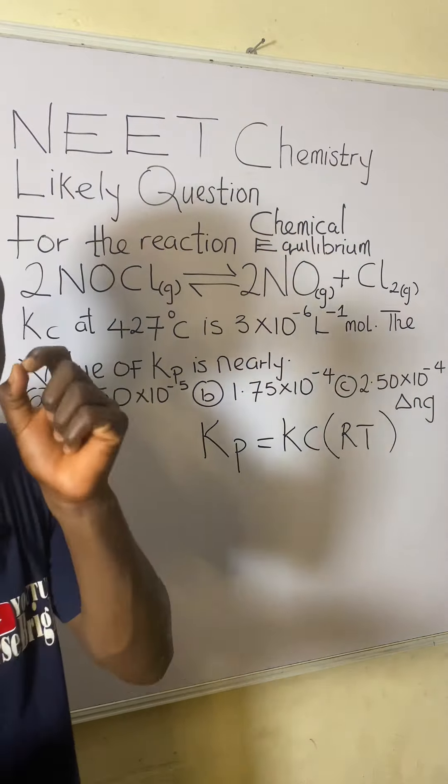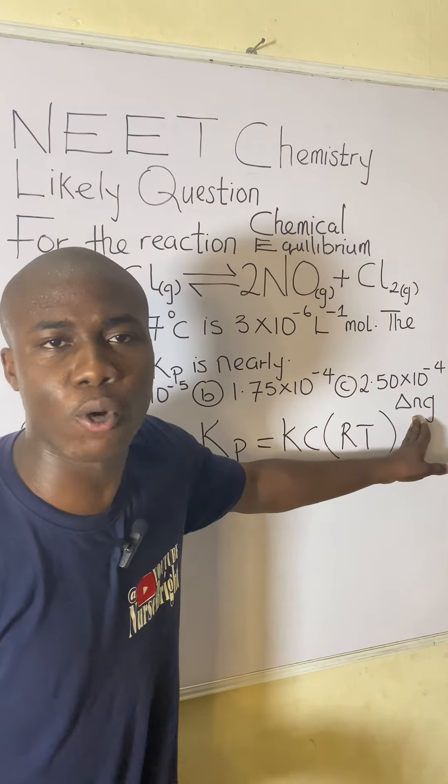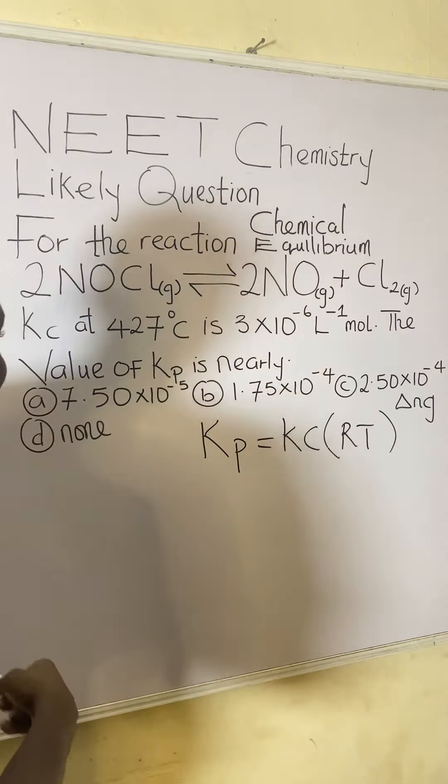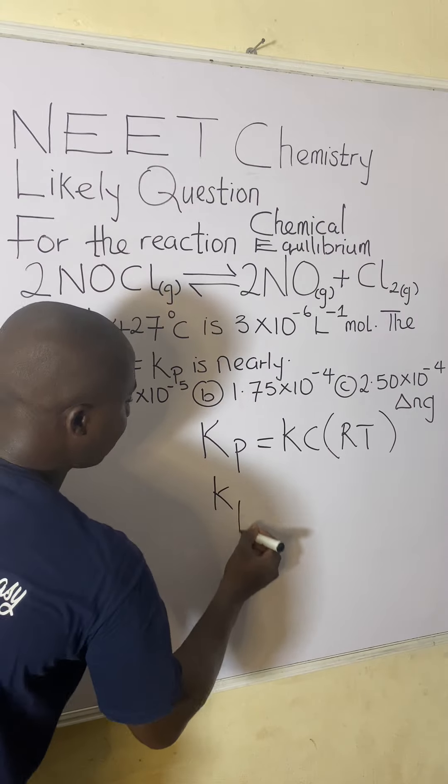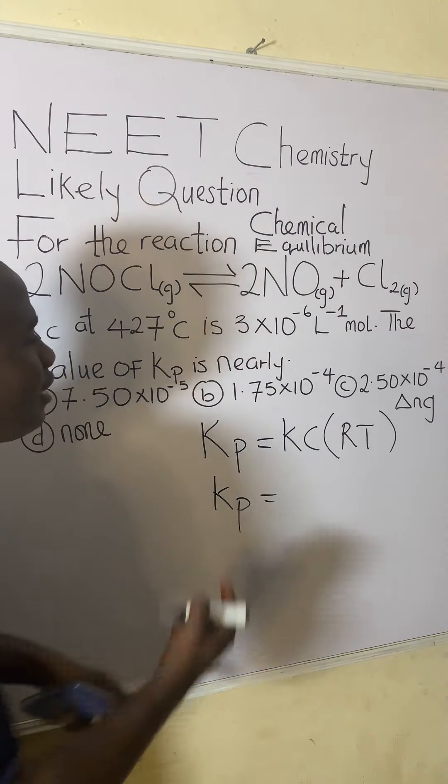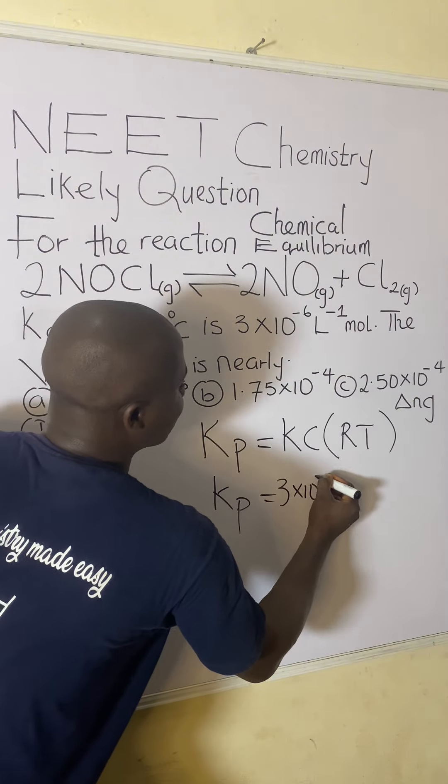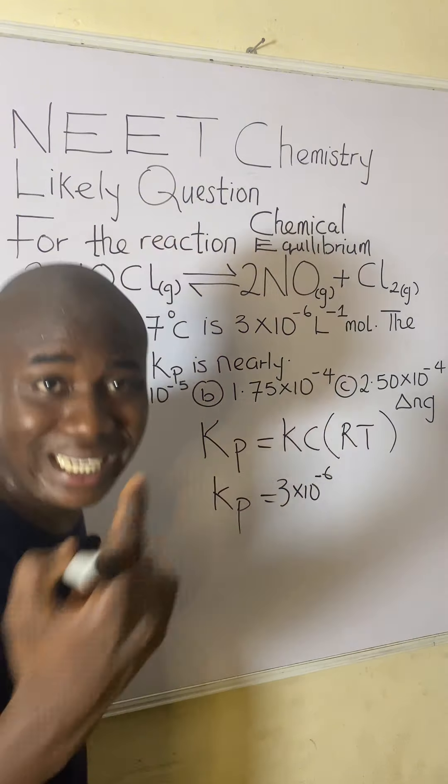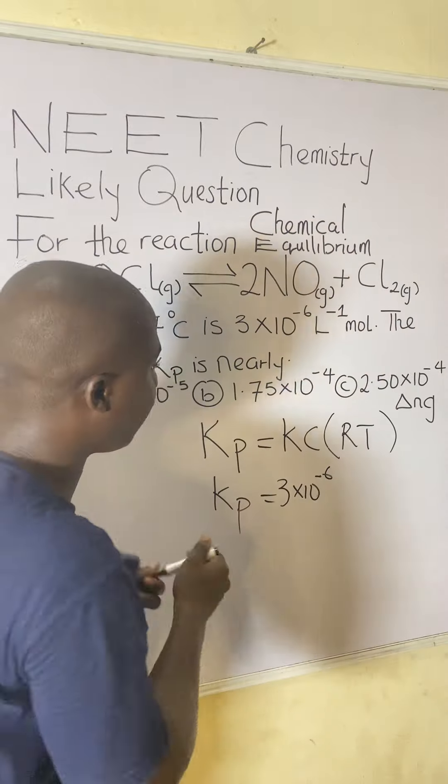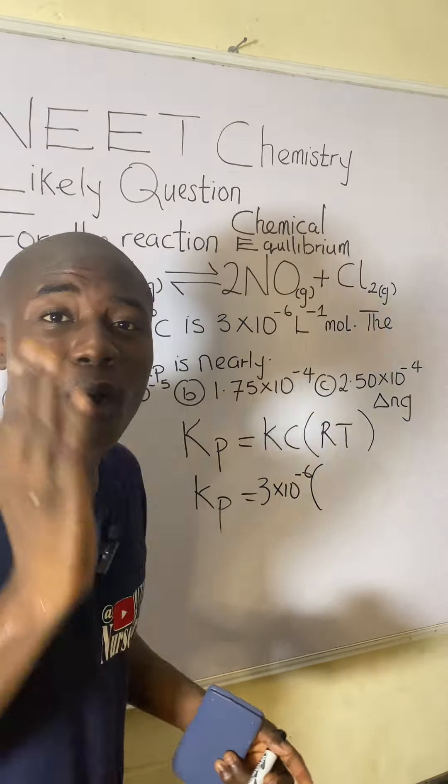raised to power of the numbers of moles of the gases. So let's work together. The question is asking us to get Kp. So Kc was given in the question already. So we'll just input, which is three times 10 raised to the power of minus six moles per liter. So moving further, open bracket, close bracket.